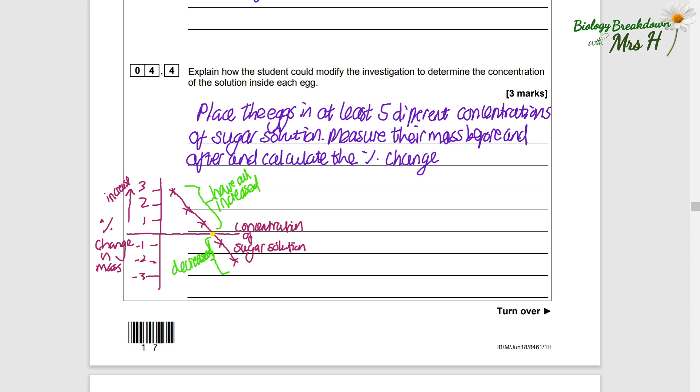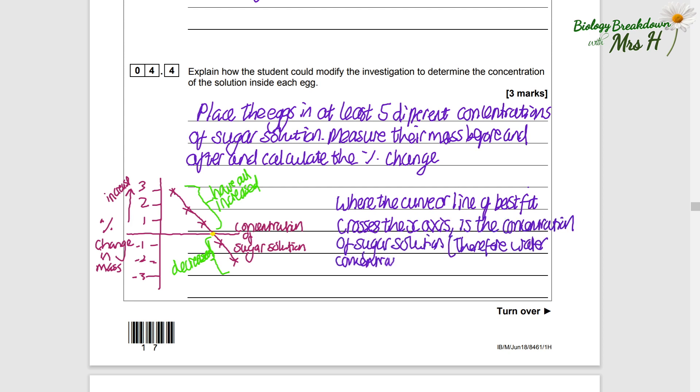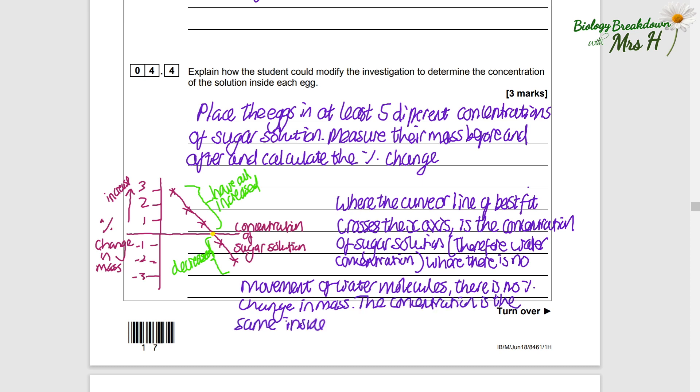So we would write: the point where the curved line of best fit crosses the x-axis is the concentration of sugar solution where there is no movement of water molecules, where there is no percentage change in mass. Thus meaning the concentration inside and outside of the egg is the same. A very hard question - check back at your required practical on osmosis in the potato chips.